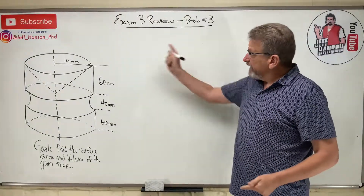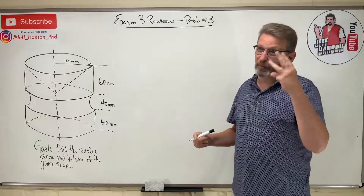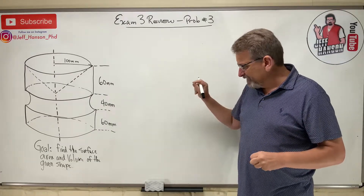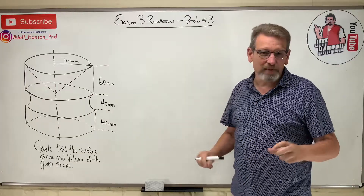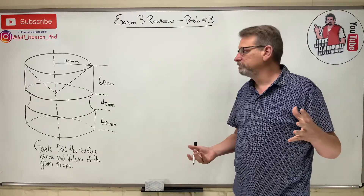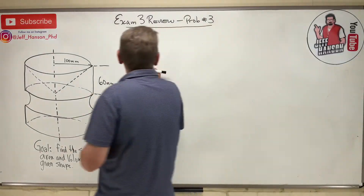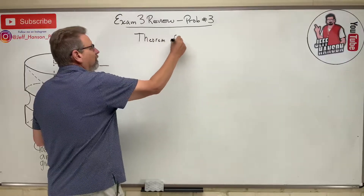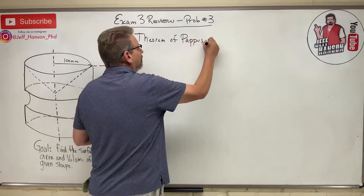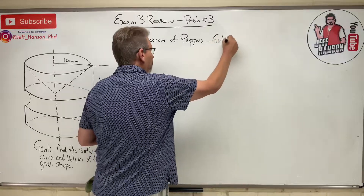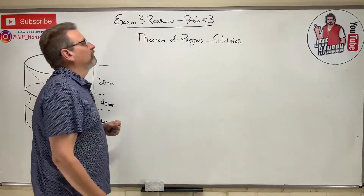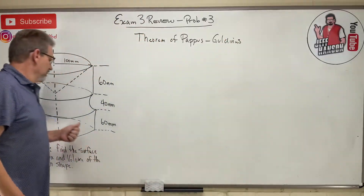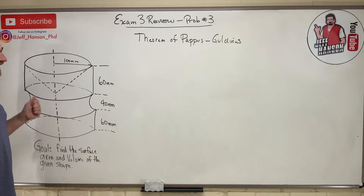All right, smart people — we're talking about exam three, word problem number three. Let's see what it says: find the surface area and volume of the given shape. What does that sound like to you? It sounds like the Theorem of Pappus-Guldinus.